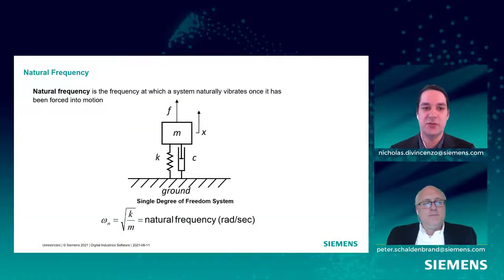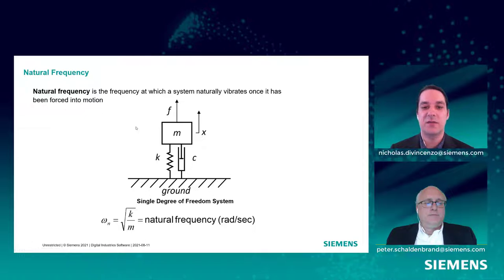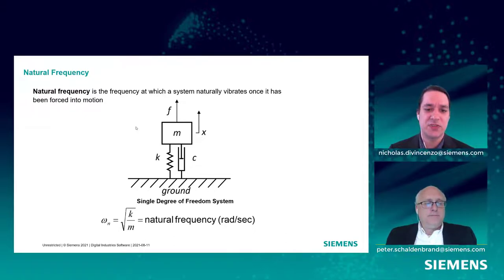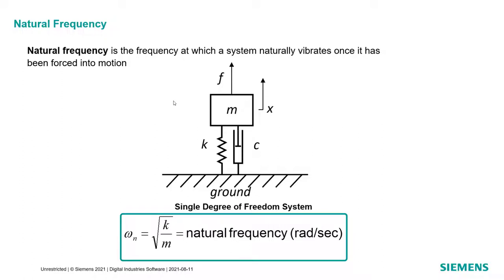We'll start off with natural frequencies. On this slide I've got a nice simple mass-spring-damper system — my little mass M connected to the ground by a spring K and a damper C. Pete, if you were to put your finger on top of this mass and depress it downwards and release it, the mass would vibrate or oscillate back and forth at its natural frequency. A natural frequency is the frequency at which a system naturally vibrates once we've forced it into motion, and that natural frequency is the square root of the stiffness of the system divided by the mass.